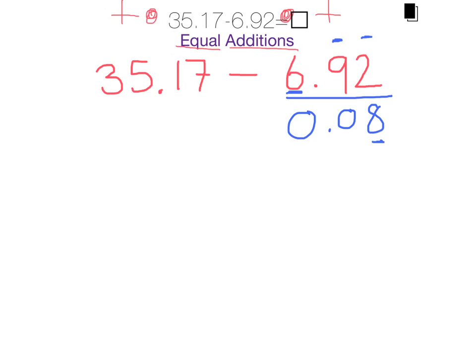Now because this is the equal addition strategy, I need to be equal. Remember, whatever I add to this side, I must then add to this side. So I need to add 0.08 to 35.17.